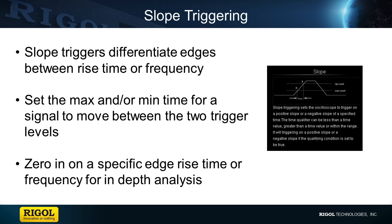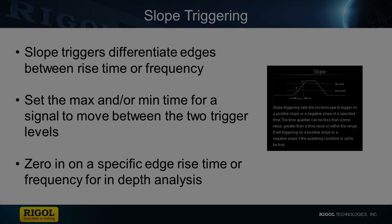With slope triggering, we can differentiate signals based on their slew rate, or the slope of the edges. In this mode, we can choose either a rising or falling edge, and set timing limits for the maximum and/or minimum time it takes to go from one trigger level to the other.